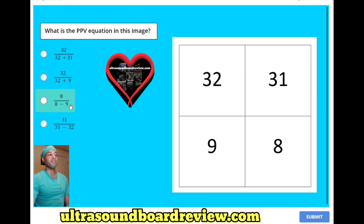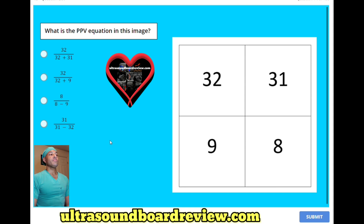Is it C, 8 divided by 8 minus 9; or D, 31 divided by 31 minus 32? The answer is A, 32 divided by 32 plus 31.